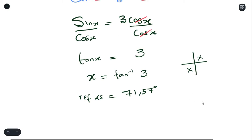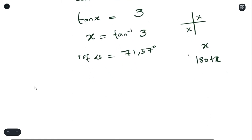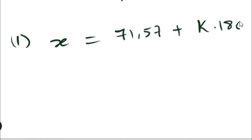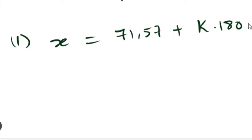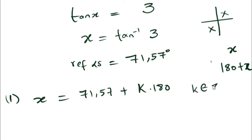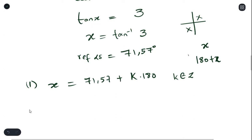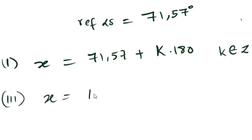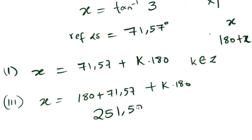Now that we have our reference angle, we substitute into the equations for where tan is positive: x and 180 + x. For tan, we always end with k180, not k360. So the first answer is x = arctan(3) + k180, and the second answer falls in the third quadrant. Both answers include 'k is an element of integers.'